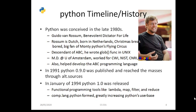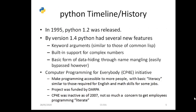Python's user base kept increasing. In 1995, Python 1.2 was released. Then version 1.4 introduced new features including keyword arguments similar to those of CommonLisp, built-in support for complex numbers, and data hiding through name mangling.